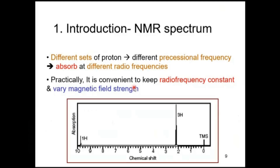Every proton in the molecule will have a different ground energy level and a different excited energy level because they are in different environments. Every proton will feel a different strength of the external magnetic field due to its environment. Because they experience different effective magnetic fields, their precessional frequency will be different, and the energy associated with them will be slightly different. As they absorb and release electromagnetic radiation, they will emit slightly different energies, and these differences define their different chemical environments.